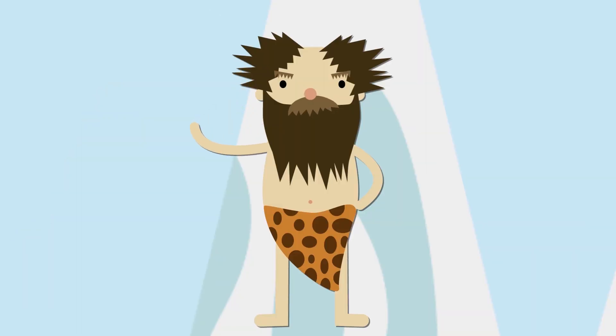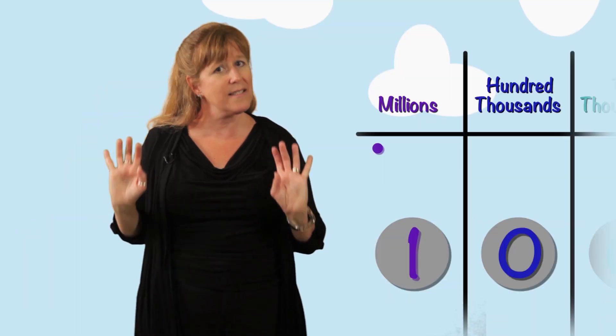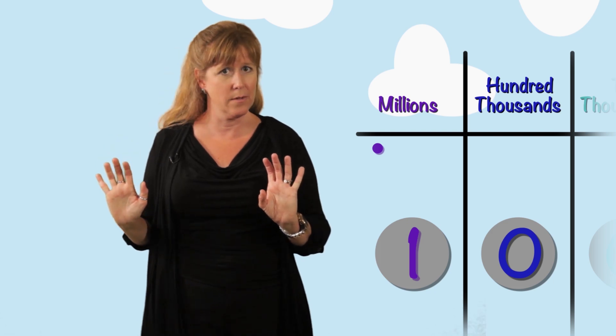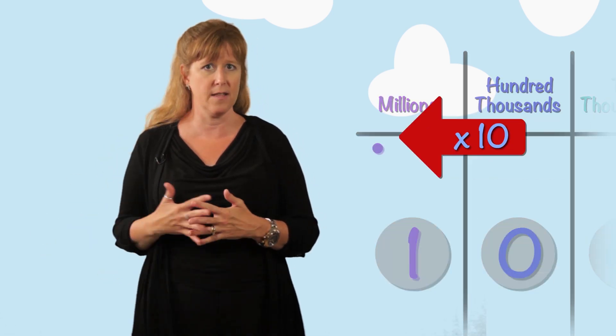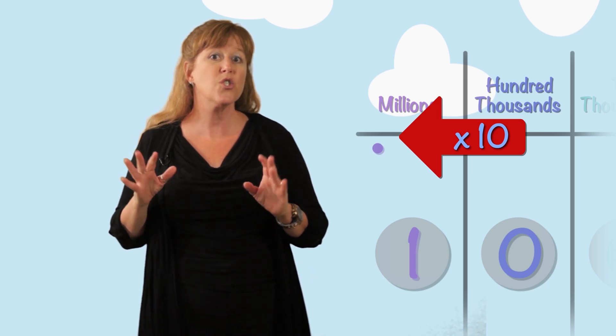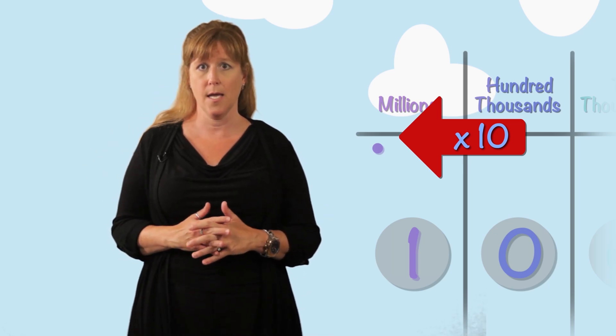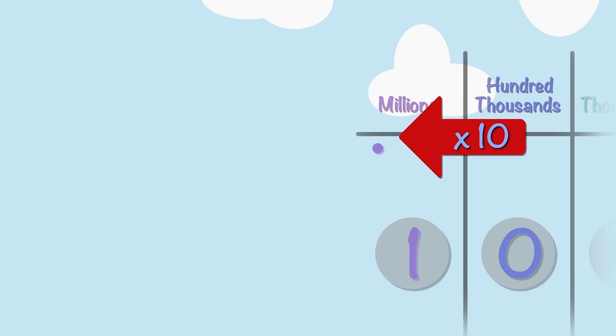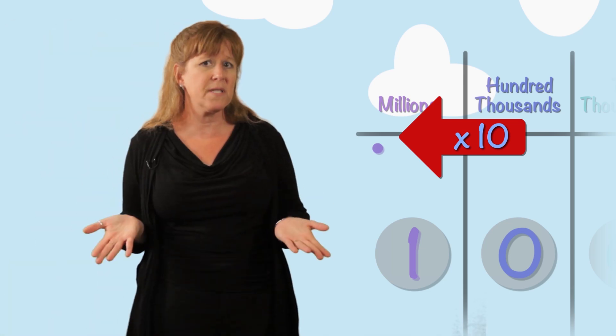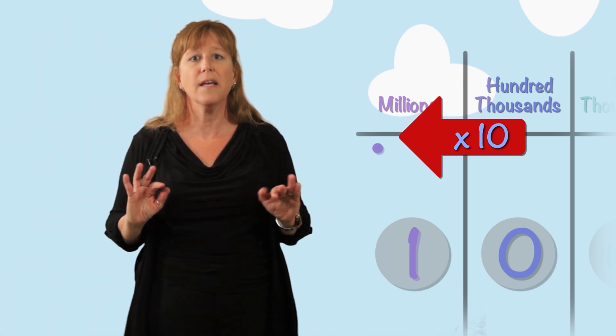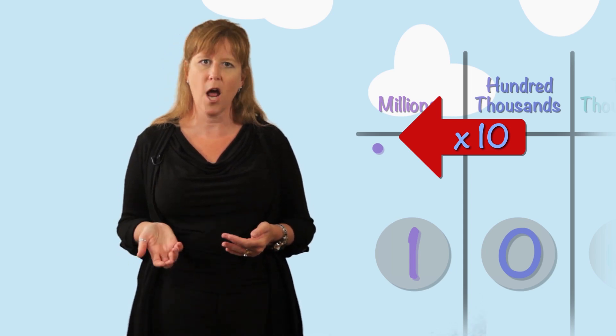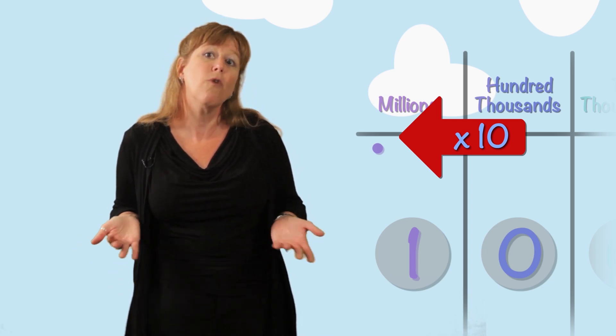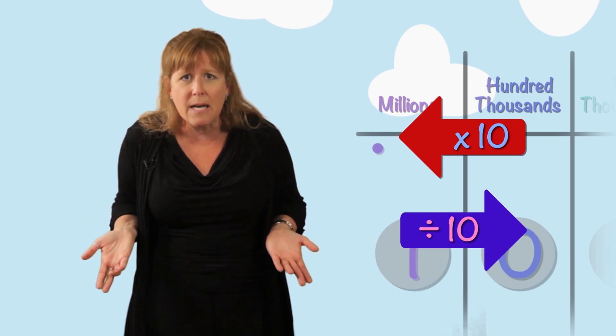Nine hundred ninety-nine thousand nine hundred ninety-nine. Whoa, whoa, whoa. Let's not just count our way down. We multiplied by ten to move left in the place value chart. So what would the opposite be? How can we move right? The opposite of multiplication is division, and the opposite of left is right. So to go to the right, we divide by ten.